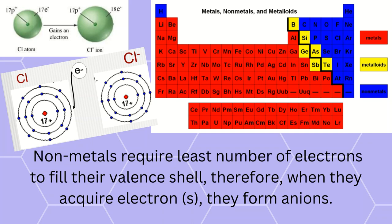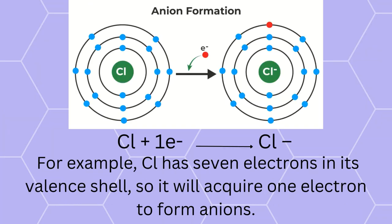Here non-metals are shown in blue color. For example, chlorine has seven electrons in its valence shell, so it will acquire only one electron.